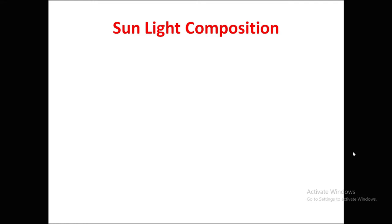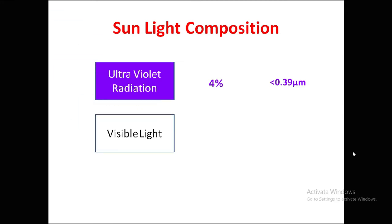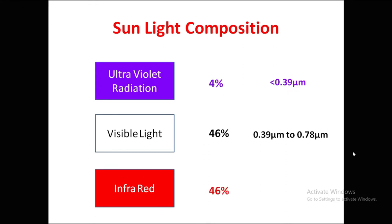The first component is ultraviolet radiation, which has more energy compared to violet radiation. It constitutes 4 percent of sunlight and has a wavelength less than 0.39 micrometers. The second part is visible light, which is 46 percent, with a wavelength range of 0.39 to 0.78 micrometers. The third is infrared light, also 46 percent, with wavelength greater than 0.78 micrometers.